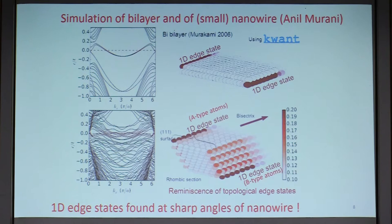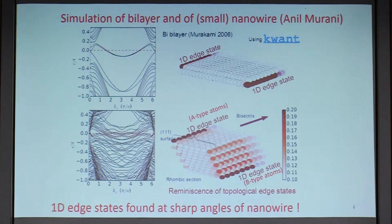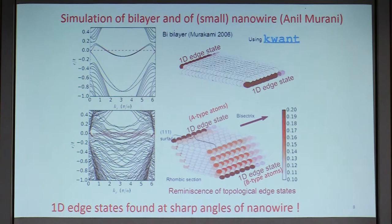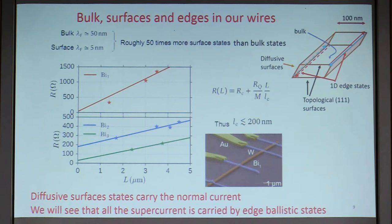Our student Anil Murani simulated first the 111 bilayer as in Murakami, finding these edge states, but also simulated something more realistic — a 3D wire with 15 layers. In this simulation you have no states in the bulk, no states on the 111 surfaces themselves, but at the edges and on the surfaces perpendicular to the 111 direction — which are the usual diffusive surfaces — there are many states. So we have no states in the bulk, strongly 1D edge states at two acute corners carrying the A atoms, and some surface states at two other surfaces. It's reminiscent of topological edge states, but we can't say if it's topological or not.